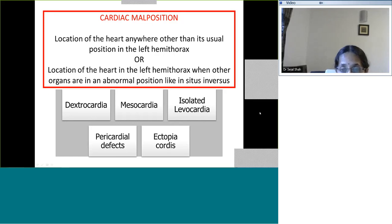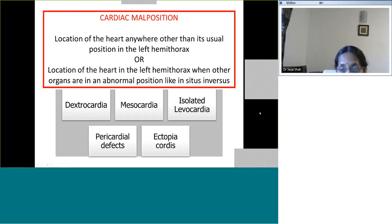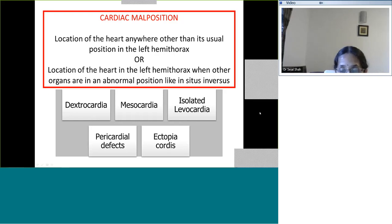So how do we define cardiac malposition? It is the location of the heart anywhere other than its usual position in the left hemithorax, or the location of the heart in the left hemithorax when the other organs are in an abnormal position. Cardiac malposition can be predominantly of five types: one which is outside the chest wall — ectopia cordis — and four inside the chest: dextrocardia, mesocardia, isolated levocardia based on the position of the apex, and pericardial defects.